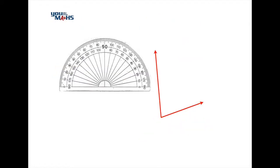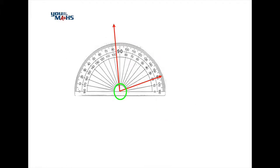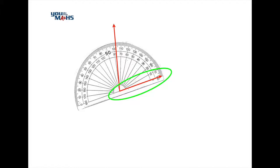Let's have a look at how we measure an acute angle using a protractor. The first thing we do is get the center of the protractor — that's the baseline — and put it on the vertex of the angle. We then align one side of the protractor so its baseline matches one of the lines or rays of the angle.